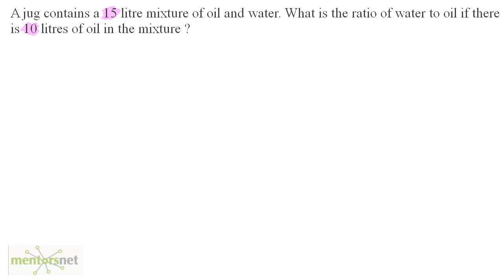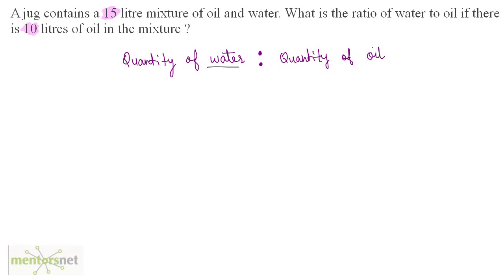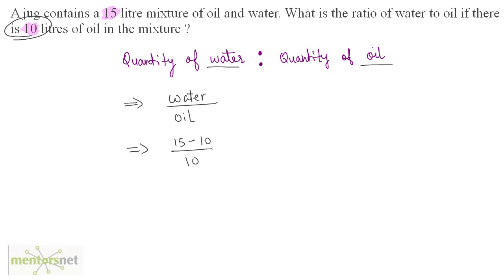Let us solve a question. You have a jug that contains a 15-liter mixture of oil and water. What is the ratio of water to oil if there are 10 liters of oil in the mixture? The ratio of water to oil is water divided by oil. The quantity of oil is 10 liters. The quantity of water is 15 minus 10, which equals 5. So the ratio is 5 by 10, which is 1 by 2. Therefore, the ratio of water to oil is 1:2.